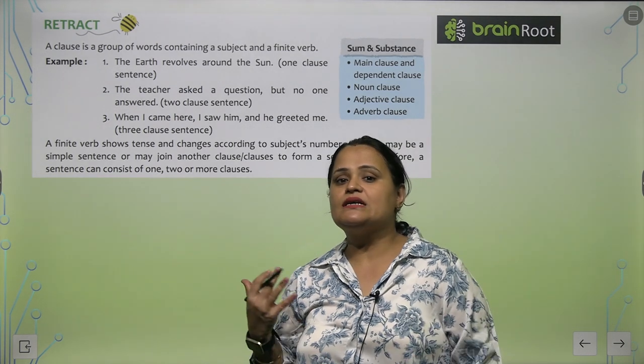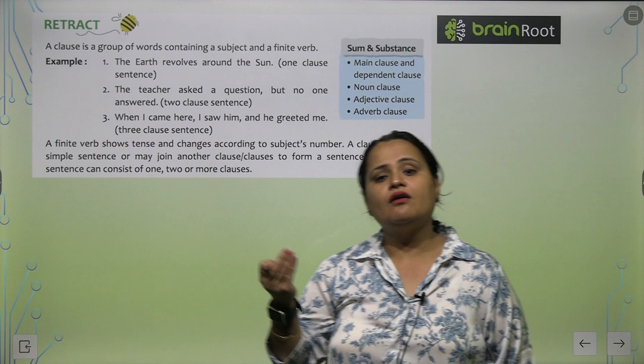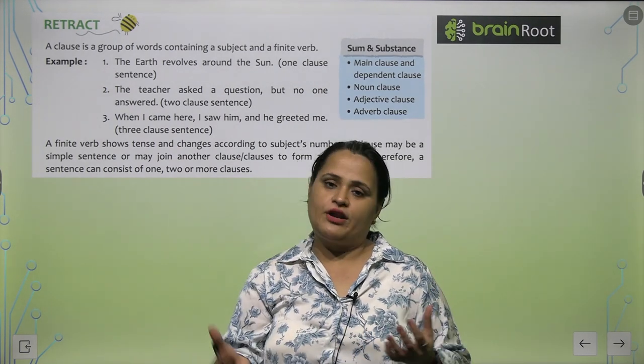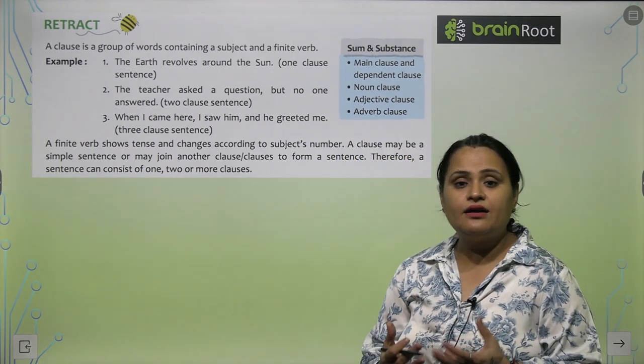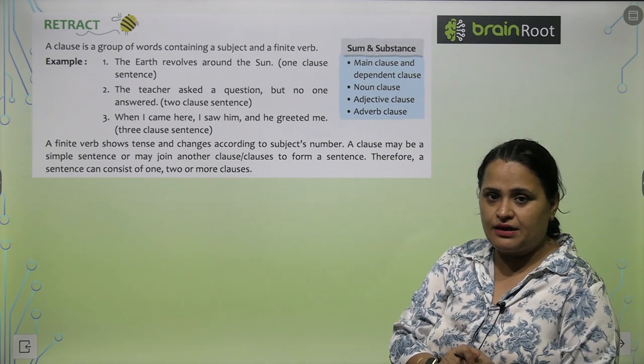So, what is a clause? A clause is a group of words containing a subject and a finite verb. Kia hota hai us mein? Ek finite verb aur ek subject. Examples, the earth revolves around the sun. One clause sentence hai yeh, okay?